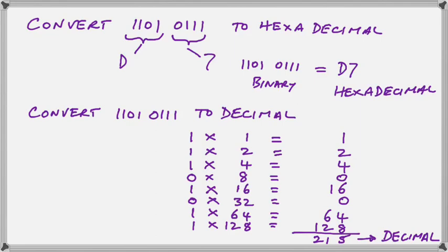If there's a 0 in that position, then we have 0. And if there's a 1, then we have the power of 2 that corresponds to that position. And then we add them all up, and lo and behold, we have 215 in decimal.